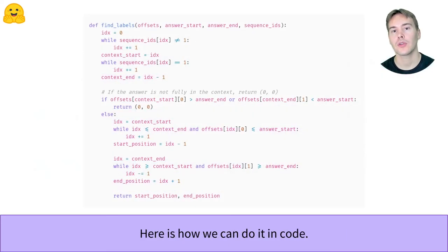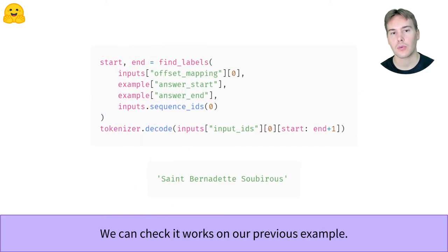In terms of code, here is how we can do it. Using the sequence IDs of an input, we can determine the beginning and the end of the context. Then we know if we have to return the CLS position for the two labels or we determine the position of the first and last token of the answer. We can check it works properly on a previous example.